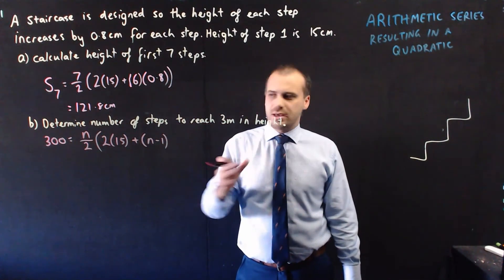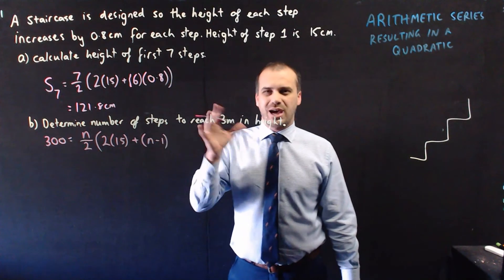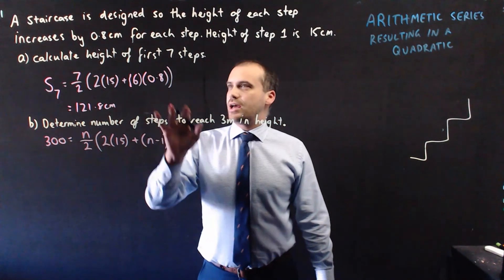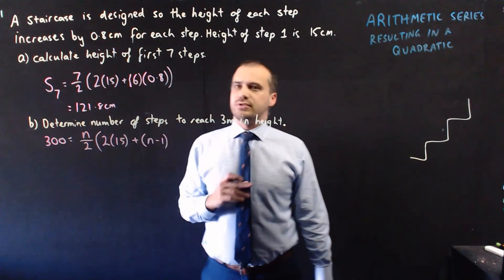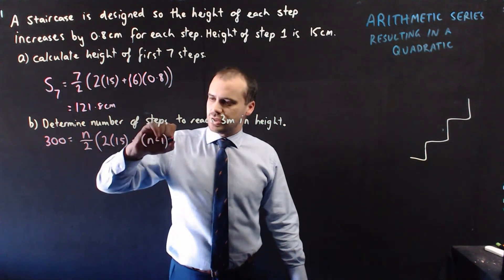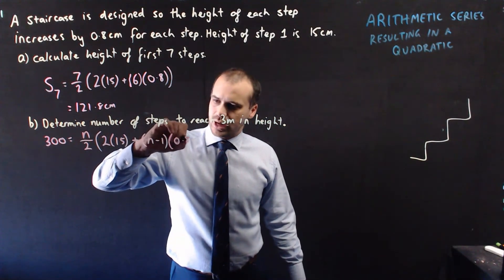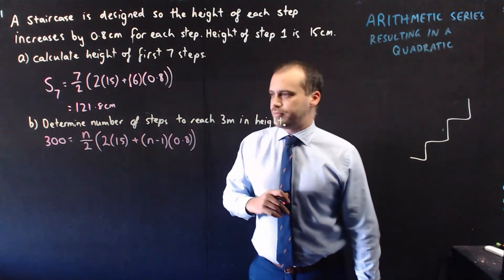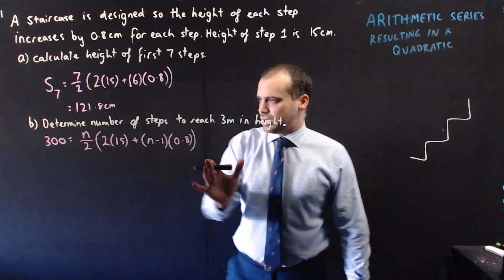This is where our quadratic's going to appear, because we've got these two n's here, and they're going to behave in different ways. And then we have a common difference, a common difference of 0.8 centimetres, so 0.8 goes there. Okay, now, we just need to tidy this up a little bit.